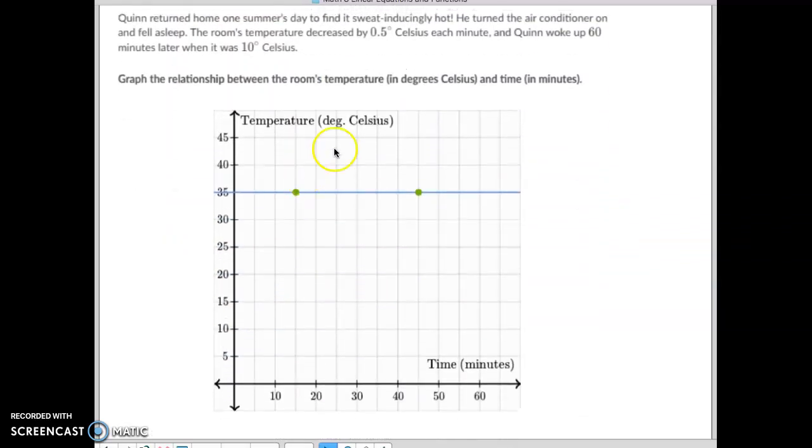Quinn returned home one summer's day to find it really hot, sweat-inducingly hot. He turned the air conditioner on and fell asleep. The room's temperature decreased by half a degree each minute. He woke up 60 minutes later to find that the temperature was 10 degrees Celsius.